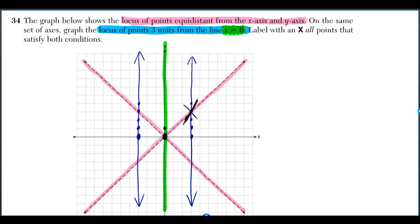Now we need to label with an x all points that satisfy both conditions, which is just going to be the points where the blue intersects the pink.